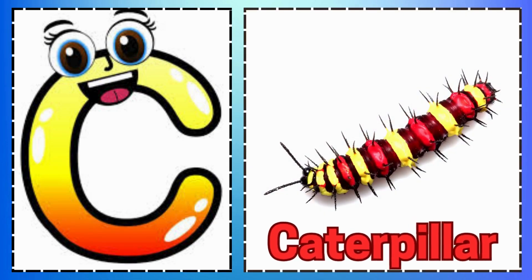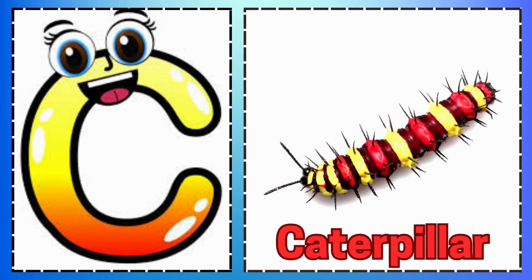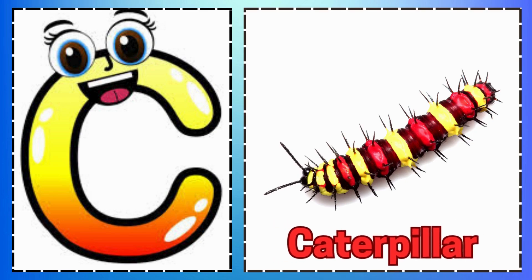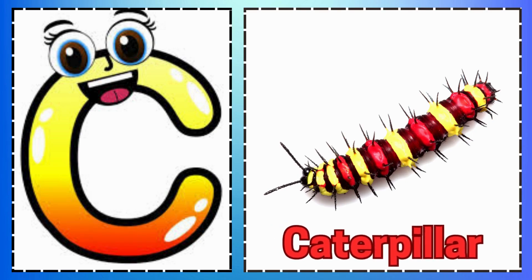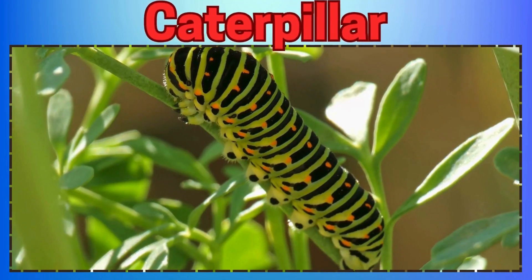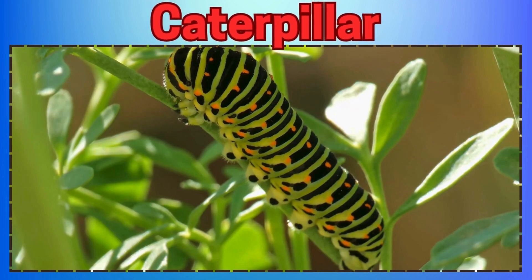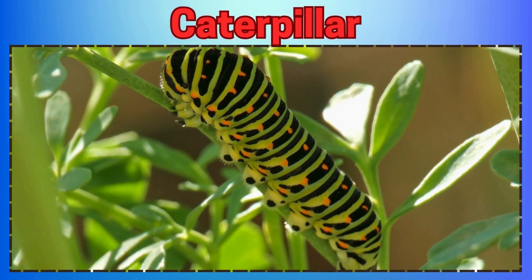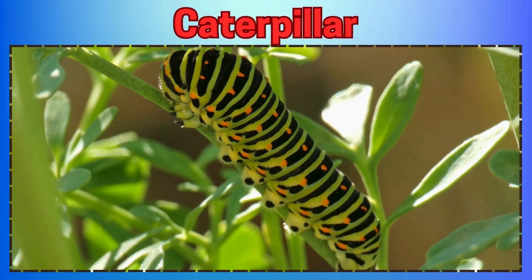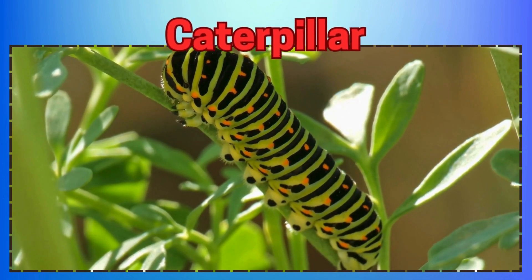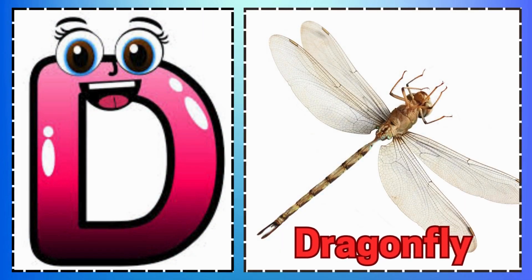C is for Caterpillar. O is for Orchard Spider Weaving its Thread. P is for Praying Mantis Turning its Head. Q is for Queen Butterfly Floating with Grace.